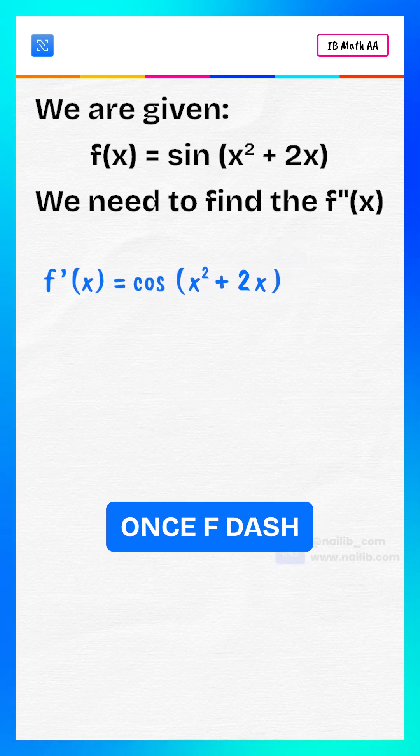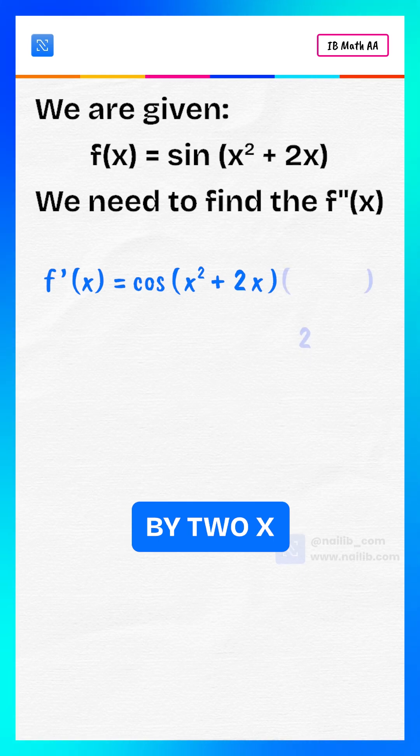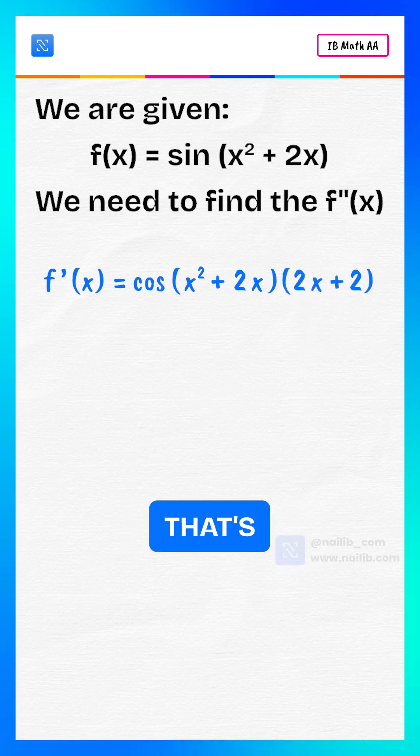Differentiate once. f dash of x equals cosine of x squared plus 2x, multiply by 2x plus 2. That's using the chain rule.